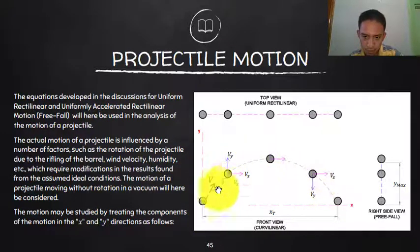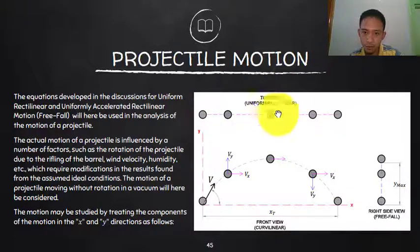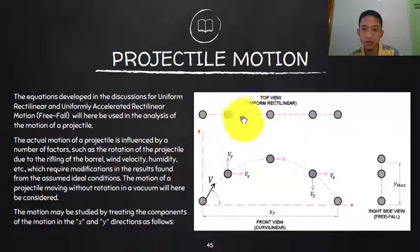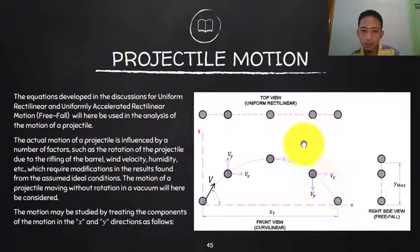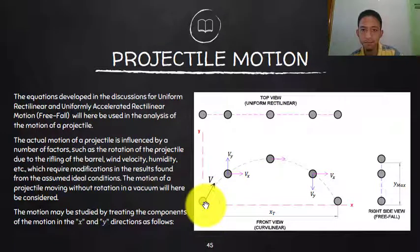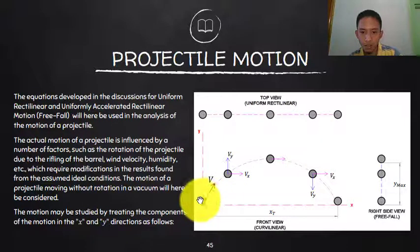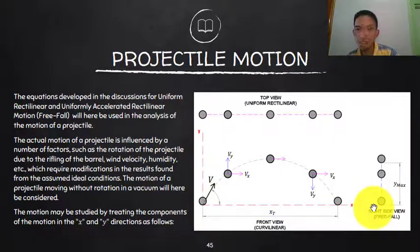If we consider only the horizontal motion — the top view — that is uniform rectilinear motion. For example, if you throw a ball upward at an angle, looking at the horizontal movement: is there any acceleration acting horizontally? No. Therefore the velocity remains constant throughout the horizontal motion.